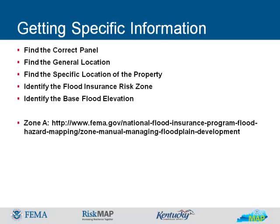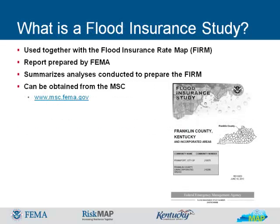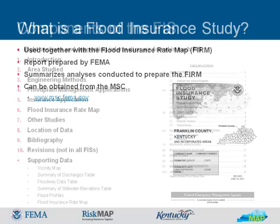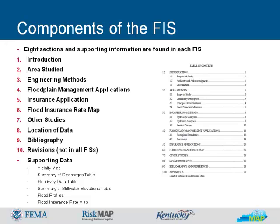Using the information in the Flood Insurance Study, or FIS, in conjunction with the Flood Insurance Rate Map, or FIRM, will enable you to determine the risk for a property and allow you to take actions that may prevent flood disasters or ensure against losses caused by floods. A FIS is a report prepared by FEMA that summarizes the analyses of flood hazards in a community. The analyses used to prepare the FIS are also used to prepare the FIRM, which shows the flood hazard areas in a community. The FIRM is the basis for floodplain management, mitigation, and insurance activities in the National Flood Insurance Program.